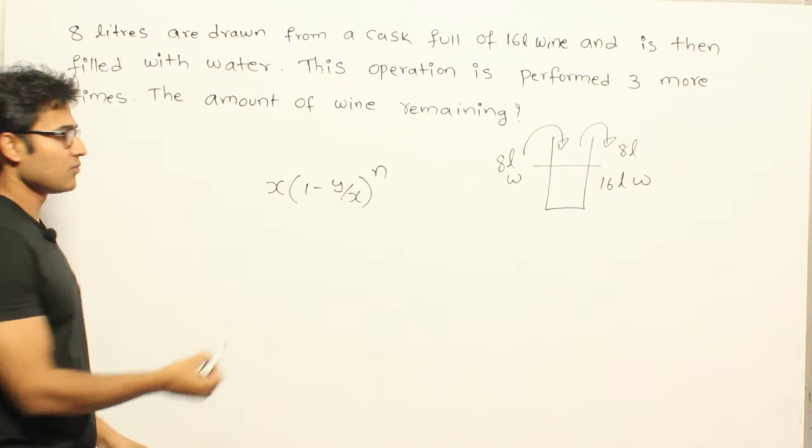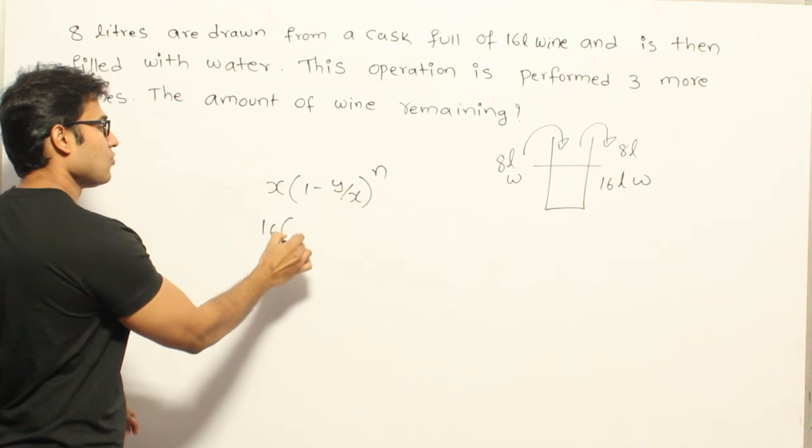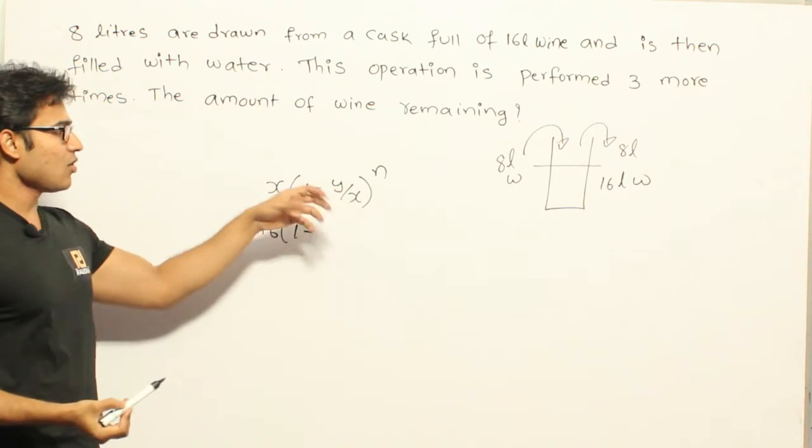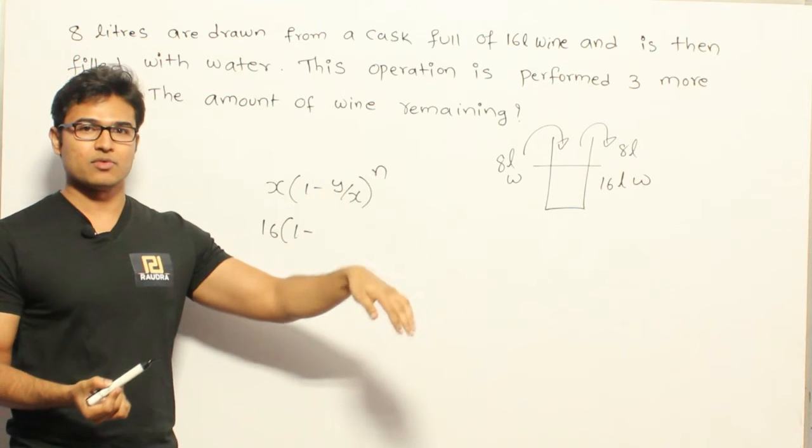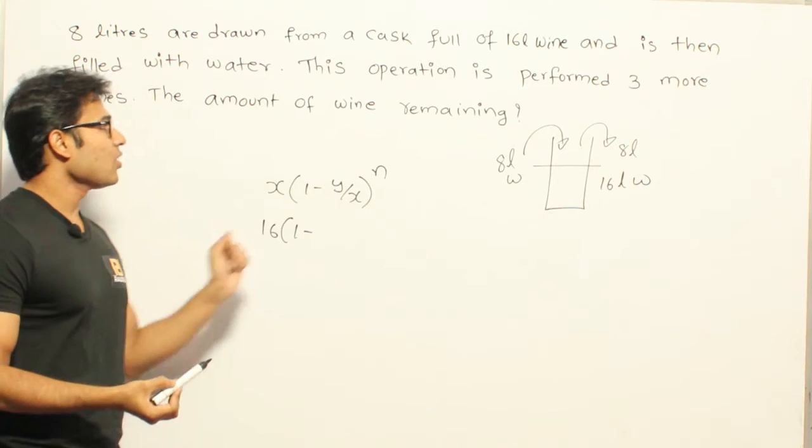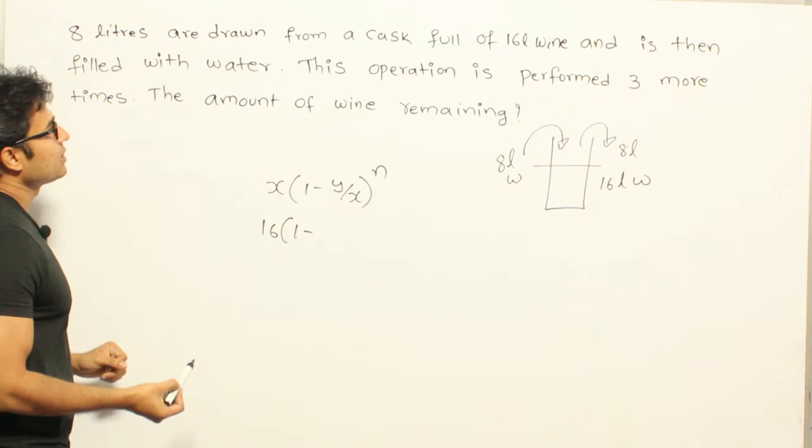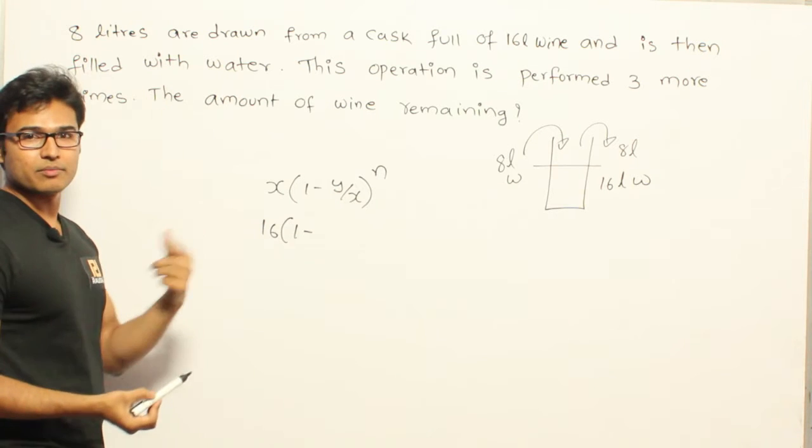Into 1 minus y is how much are you going to pull out of that and how much water are you going to replace every time. Now what is y here? Y is 8, because 8 liters are being drawn.